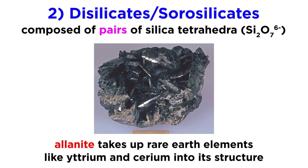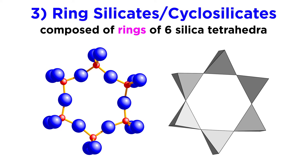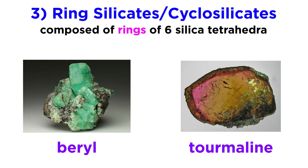Ring silicates, also called cyclosilicates, are composed of silica tetrahedra that share two oxygen atoms and have a silicon to oxygen ratio of 1 to 3. Their name is derived from their structure, which forms rings of six silica tetrahedra stacked atop one another. They are a small group with only a handful of commonly occurring minerals, including the popular gemstones beryl and tourmaline, with beryl also being an important ore of beryllium.